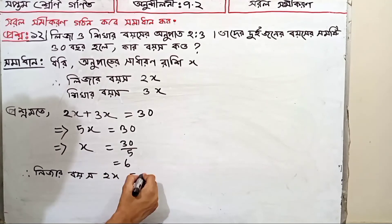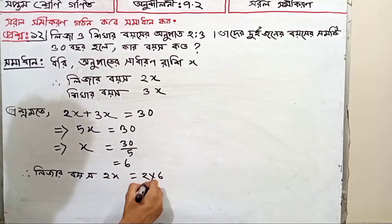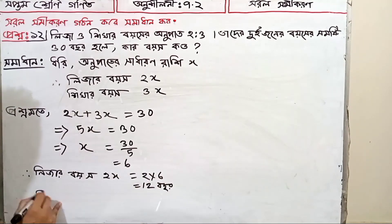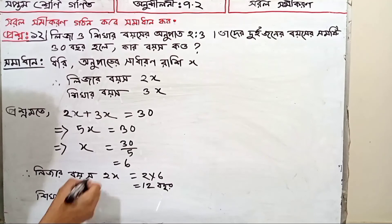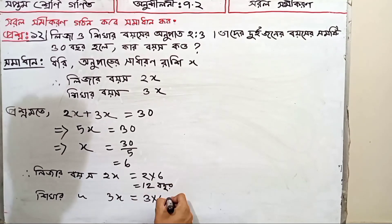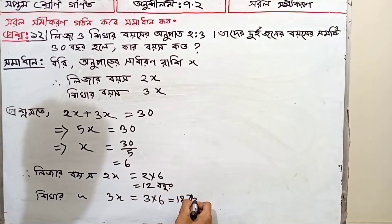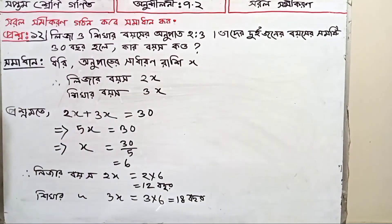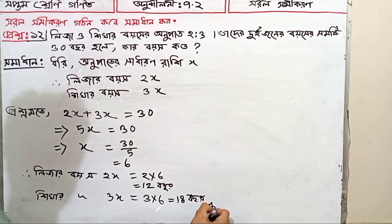2x equals to 13, 6, 2x equals to 12. 5x equals to 12, 5x equals to 13. 5x equals to 38. 6 equals to 13. Answer.